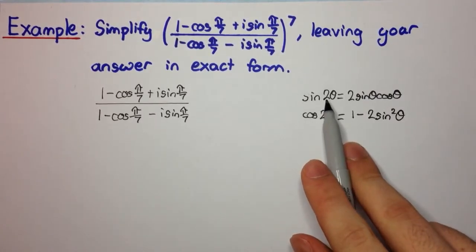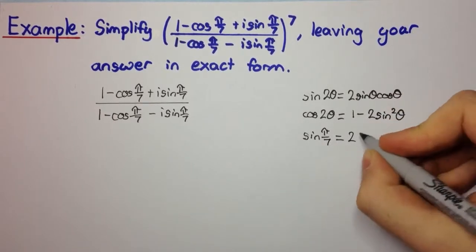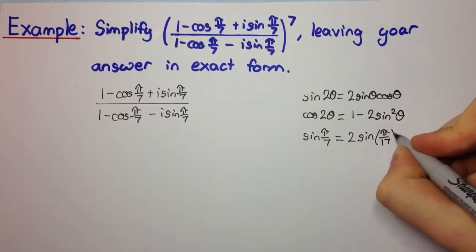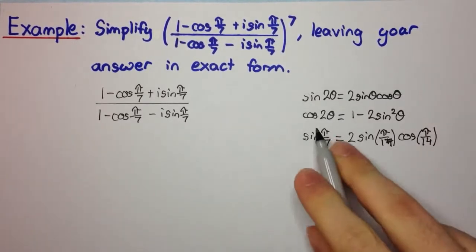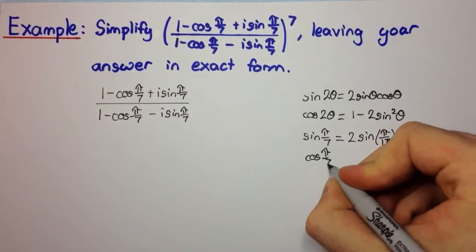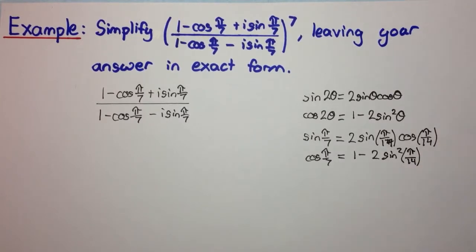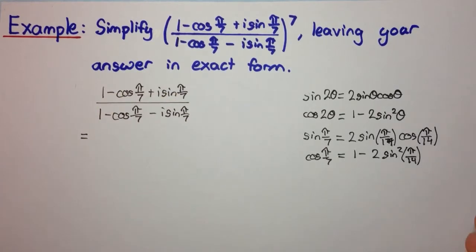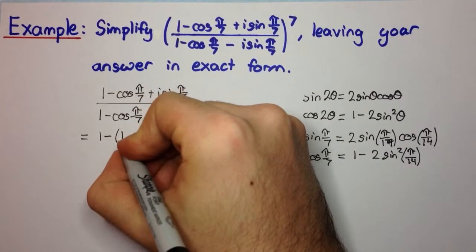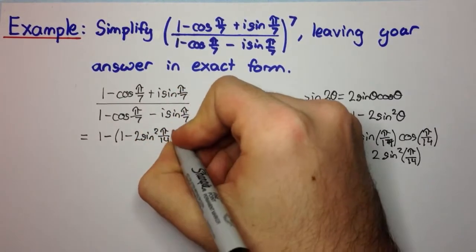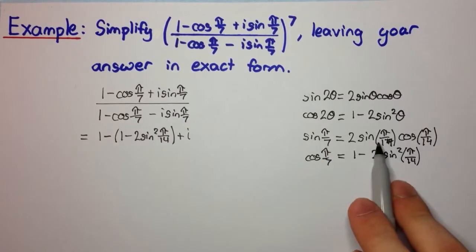We want 2θ to equal π/7, so sin(π/7) = 2·sin(π/14)·cos(π/14), and cos(π/7) = 1 minus 2·sin²(π/14). Substituting into the numerator: 1 minus (1 minus 2·sin²(π/14)) plus i·(2·sin(π/14)·cos(π/14)).